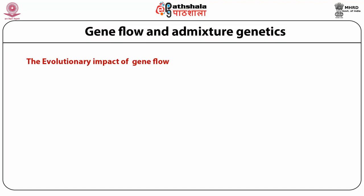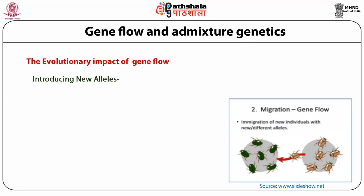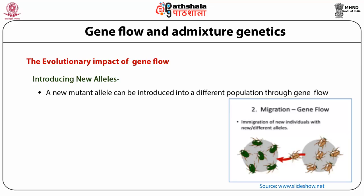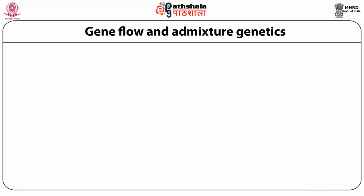Now let's come to the evolutionary impact of gene flow. Gene flow affects evolution in many ways. First of all, the introduction of new alleles into the population: the only way a new allele can enter a population is either through mutation or recombination. Other evolutionary processes such as drift and selection can increase or decrease the frequency of a new mutation. Although mutation is the ultimate source of all new alleles, a new mutant allele can be introduced into different populations through gene flow, allowing the spread of new mutants into different populations of a species, subjecting each population to further effects of drift and selection.